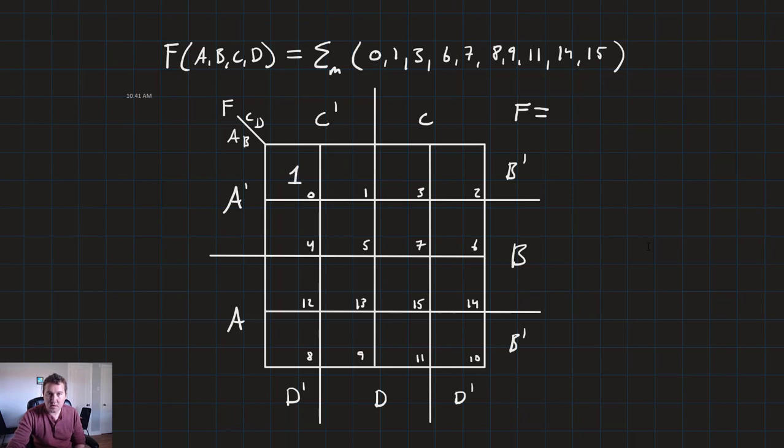And then we need to drop in all of those terms. So we go 1 in 0, 1, 3, 6, 7, 8, 9, 11, 14, and 15. And so now we go ahead and group our terms. So let's just go take a look at it. One thing that jumps out is this column, 3, 7, 15, and 11.